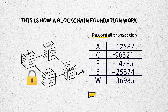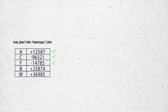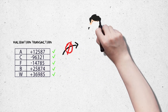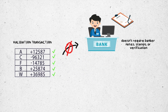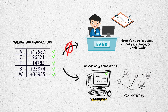It will record all transactions to track the source and the owner on that blockchain foundation. But this is not the end — it doesn't require banknote stamps or verification to verify those transactions. It needs only computers that run independently, called a validator, to verify and record the transaction in the ledger in the P2P network.